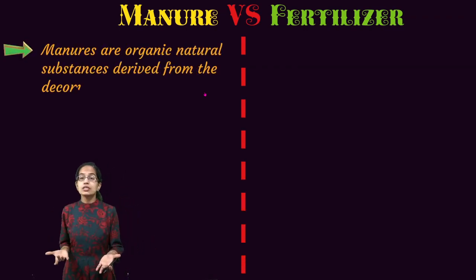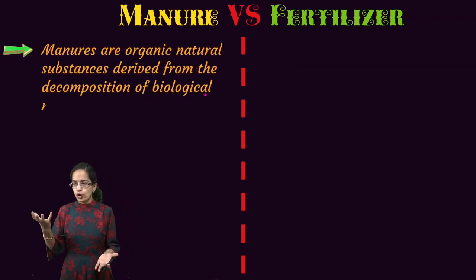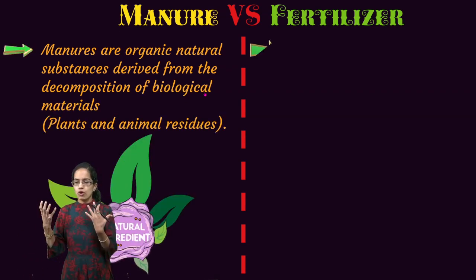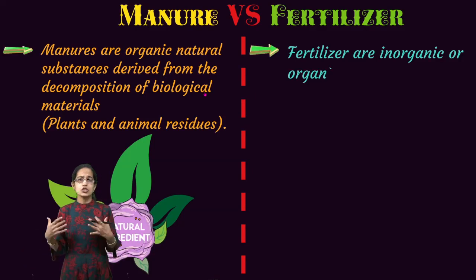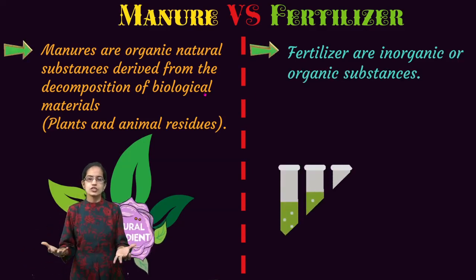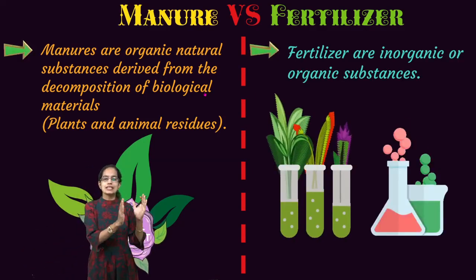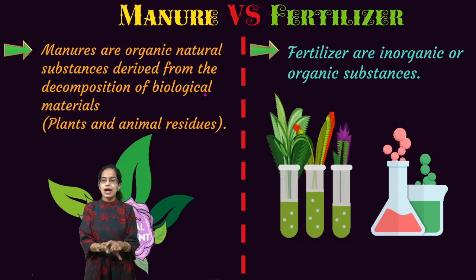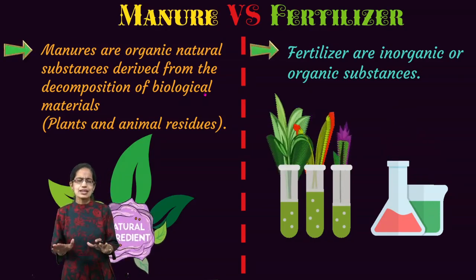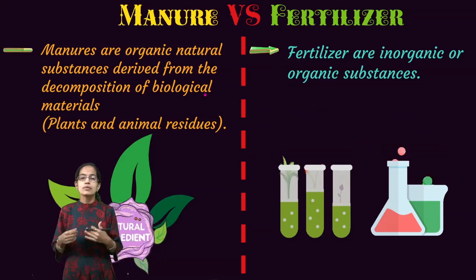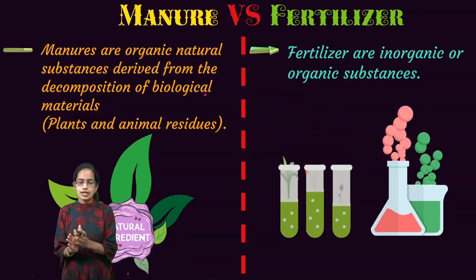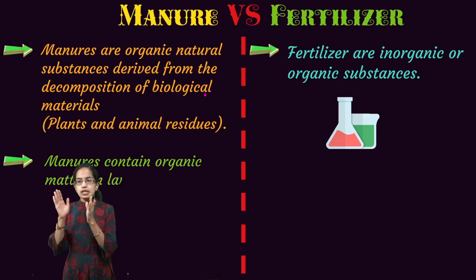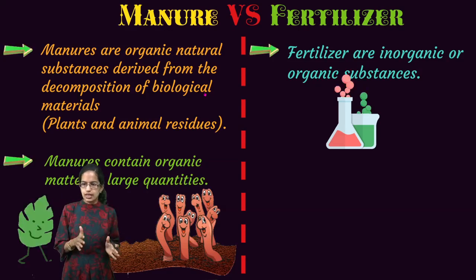When we say manure, it is an organic substance decomposed biologically. So, it could be in the form of cow dung, animal residue, plant residue. However, fertilizers are synthetic — they can be synthetic, they can be organic, but they are practically not biological in nature. That is one of the major differences between manure and fertilizer.